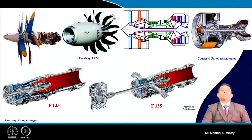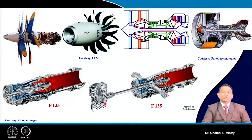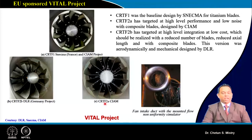The F-135 engine is also fitted with an aircraft having VTOL (vertical takeoff and landing) capability. For that purpose, a contra rotating fan configuration is used. This demonstrates the benefit of counter rotating fans for vertical takeoff and landing, and the technology is proven with these engines already in existence.